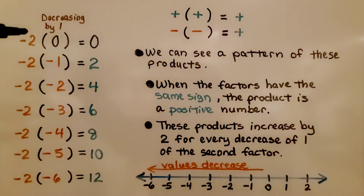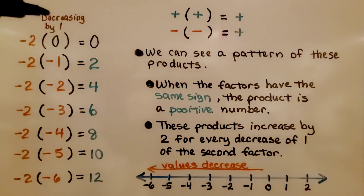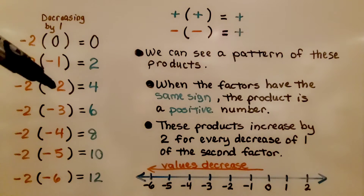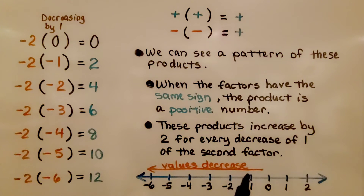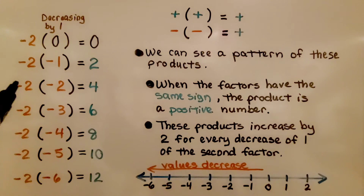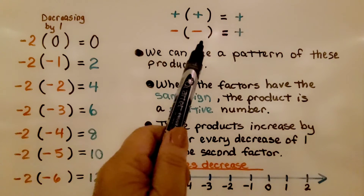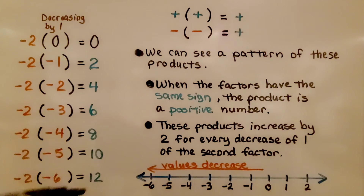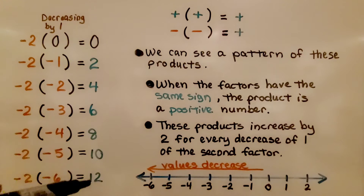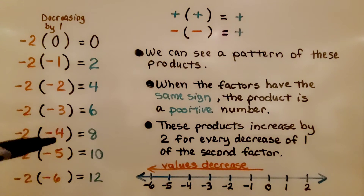Take a look at these equations. We're multiplying the factor negative 2 by 0, negative 1, negative 2, negative 3, negative 4, negative 5, and negative 6. The second factor is decreasing by 1 each time — as values head to the left, they decrease. We're multiplying a negative times a negative; they have like signs, so the product is positive. We can see a pattern: when factors have the same sign, the product is positive, and these products increase by 2 for every decrease of 1 in the second factor.